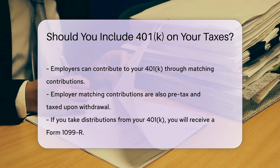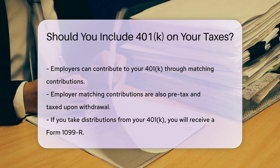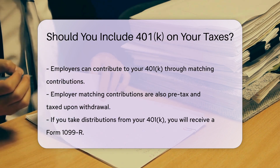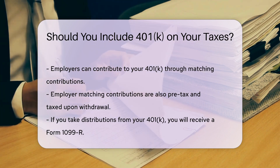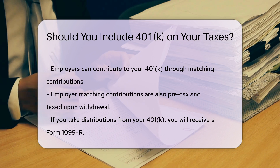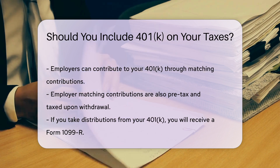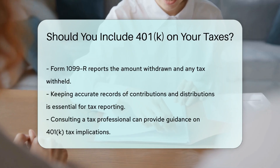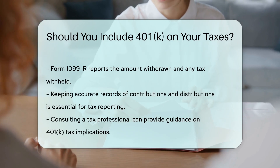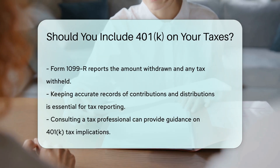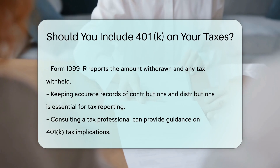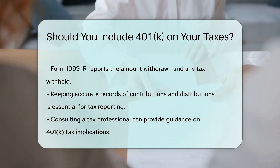When filing your taxes, you will receive a Form 1099-R if you take distributions from your 401k. This form reports the amount you withdrew and the tax withheld. It is essential to keep accurate records of your contributions and distributions. This will help ensure you report the correct amounts on your tax return.